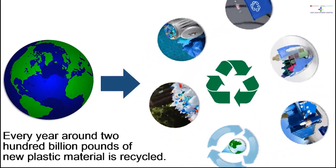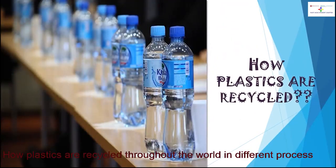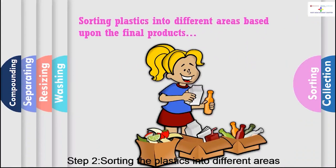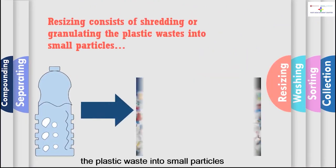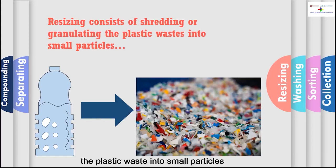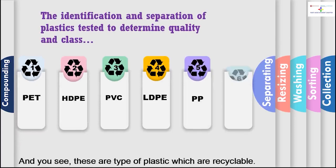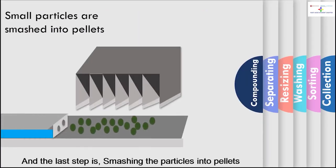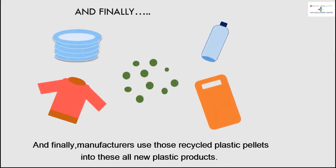Let's see how plastics are recycled. Step 1: collection of plastic waste. Step 2: sorting the plastics into different categories. Step 3: washing them, just like with clothes and fruits. Step 4: shredding or granulating the plastic waste into small particles. Step 5: identification and separation of the small plastic particles by type to determine which are recyclable. The last step is compressing the particles into pellets, which manufacturers then use to create new plastic products.